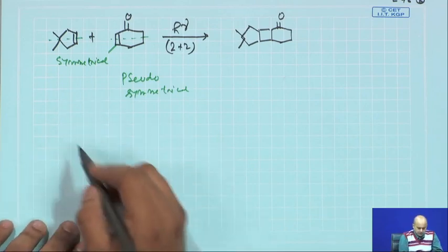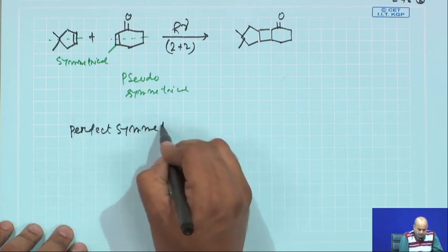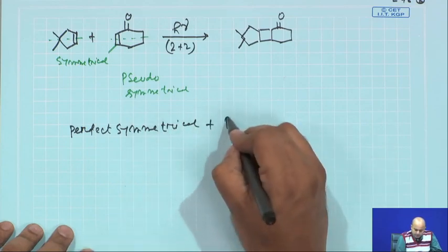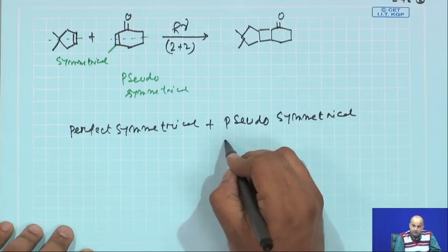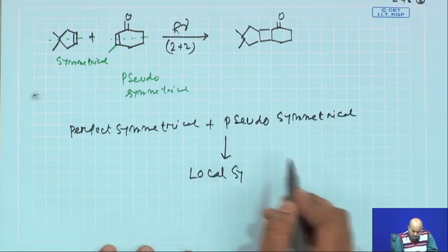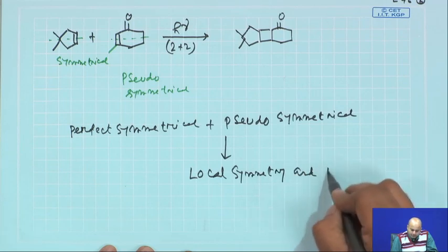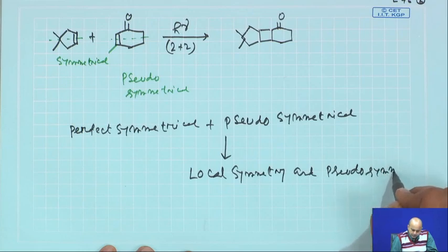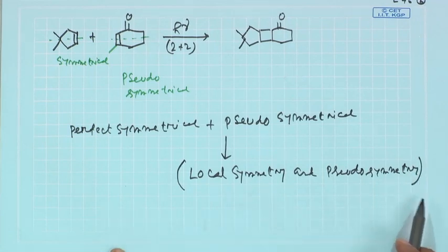What I am now analyzing: a perfectly symmetrical intermediate plus a pseudo-symmetrical intermediate gives you a molecule containing local symmetry and pseudo-symmetry. This consideration is important — you would not normally find it in a textbook. The analysis through local symmetry and pseudo-symmetry is very crucial and is a nice demonstration. So, first you do the 2+2 reaction.